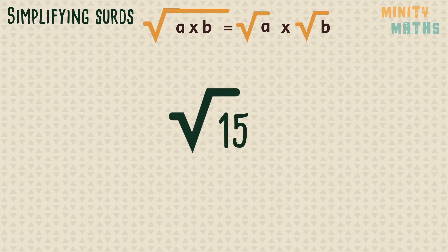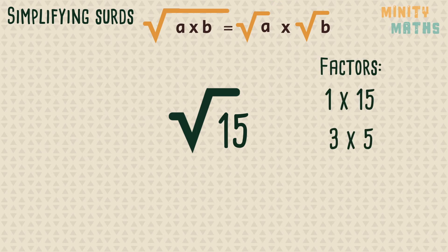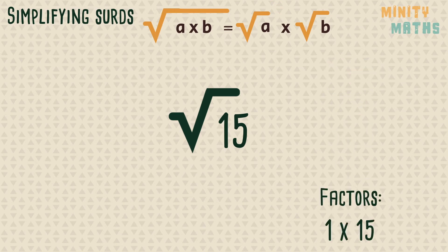Let's look at another surd and try to simplify using the same rule. So again we make a list of all the factors of 15. None of these factors are perfect squares above 1, therefore this surd is already in its simplest form.